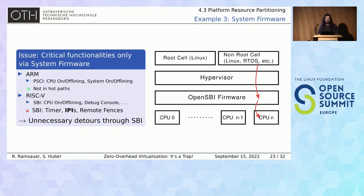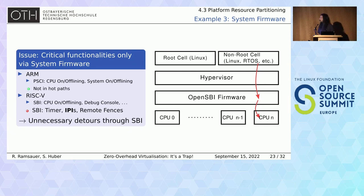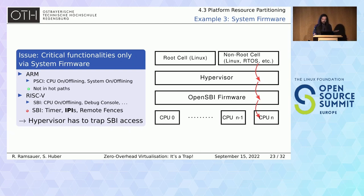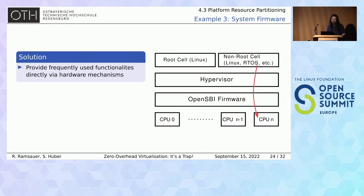Another example violating platform resource partitioning is when critical functionalities are only available via system firmware. On ARM we have to use the PSCI for things like CPU on/offlining — not a big problem since it is not in hot paths. On RISC-V, however, we have to use the OpenSBI for things like timers, IPIs, or remote fences — stuff that happens all the time. We have to frequently use the SBI, which costs time. What makes things worse is that access has to be intercepted via the hypervisor, costing additional time again. The solution: provide frequently used functionalities directly via hardware mechanisms.